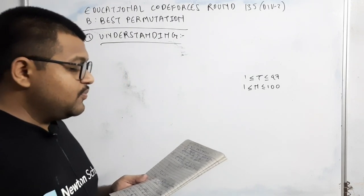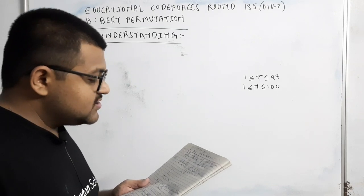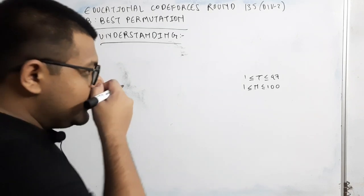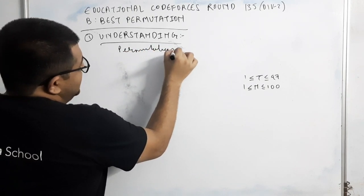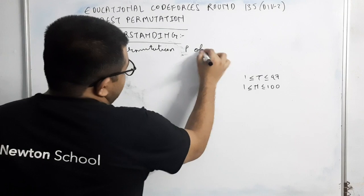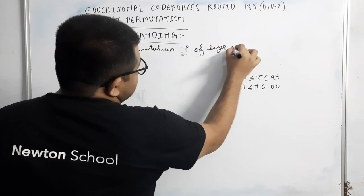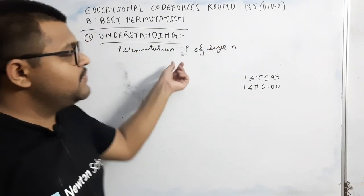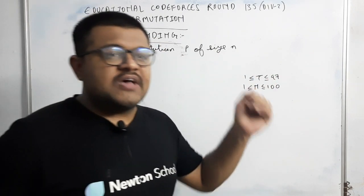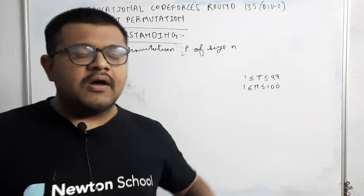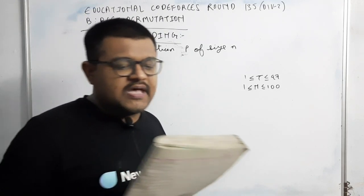Let's define the value of the permutation p of n integers 1 to n as follows. First of all, permutation p of size n की value नीचे defined की गई है. अब permutation p of size n का मतलब क्या होता है? कि उसमें 1 से लेके n तक सारे integers exactly एक बार occur करेंगे in any order. That is a permutation p of size n.